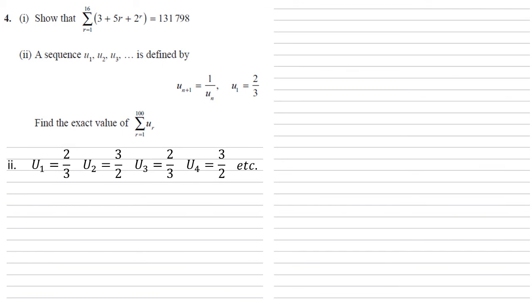If we're going all the way up to u100, half of those terms would be 2 thirds, half of those terms would be 3 over 2. The value of our sum to 100 is going to be 50 times 2 thirds plus 50 times 3 over 2, which is equal to 325 over 3.